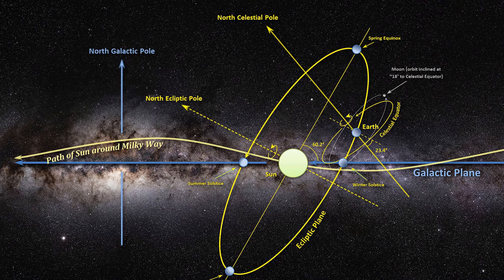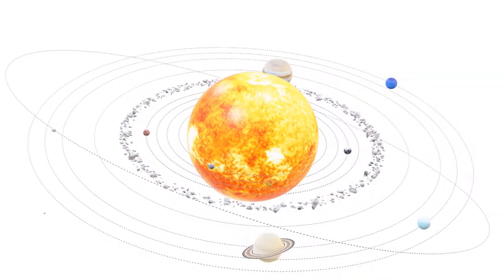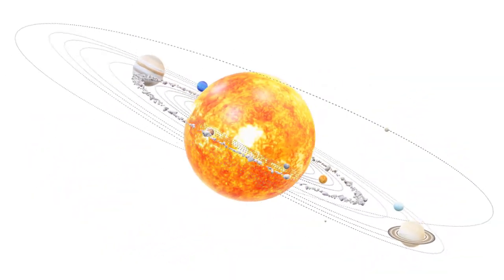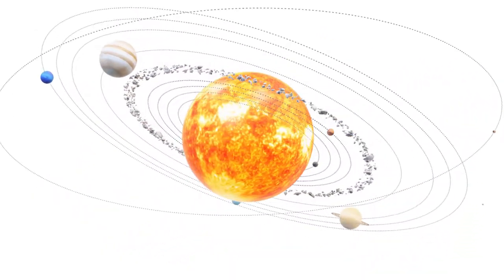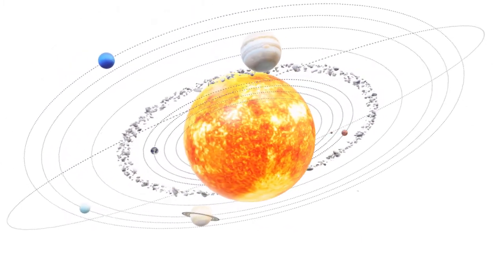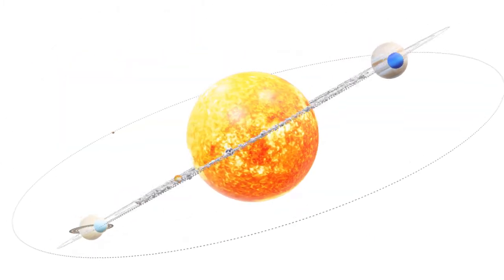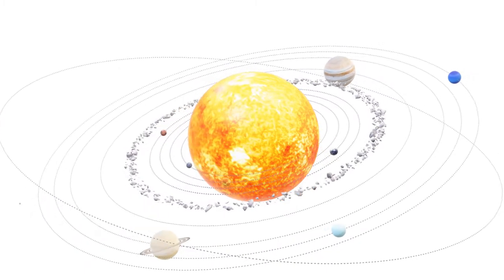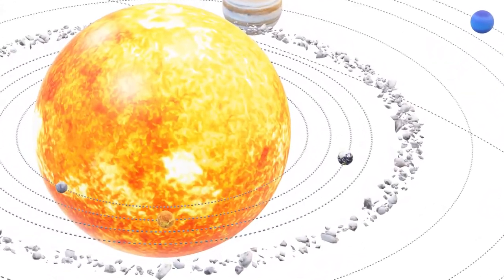Our solar system takes about 226 million years to complete one orbit around the Milky Way center in a clockwise direction. However, Earth revolves in a counter-clockwise direction around the sun.